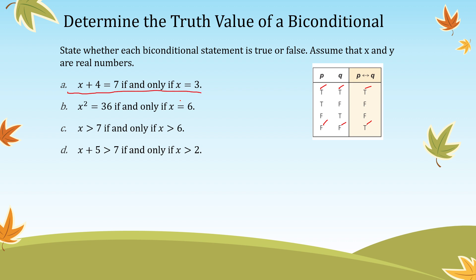For letter A: x + 4 = 7 if and only if x = 3. When x = 3, the first statement: 3 + 4 = 7, which is true. And x = 3 is also true. So both P and Q are true, and therefore the biconditional statement is true.